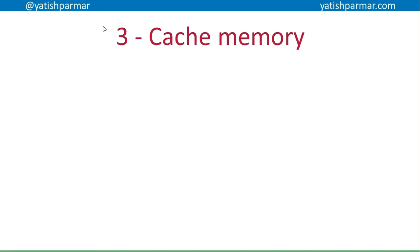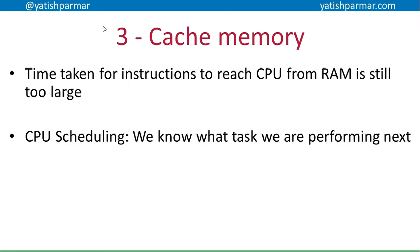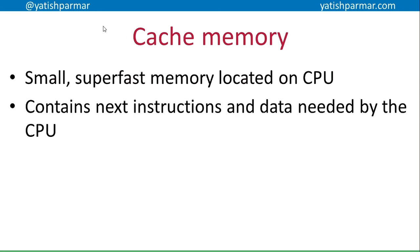The third way of improving the performance of your CPU is to make use of cache memory. If we think about the execution of instructions, the time taken for instructions to reach the CPU from the RAM is still too large — the RAM is fast, but not fast enough. In terms of CPU scheduling, we can predict what set of instructions we're going to need next. What if we could prepare those instructions and data and get them ready for the CPU in a really accessible location? That's basically what cache memory is: small, super-fast memory located on the CPU that contains the next instructions and data needed by the CPU.